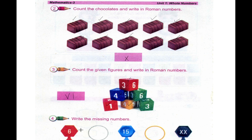Write the missing numbers. Now we have to write the missing numbers here. This is VI which is 6. IX is 9. XV is 15. And XX is 20. This exercise has been completed.